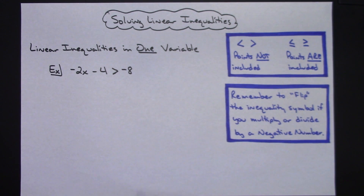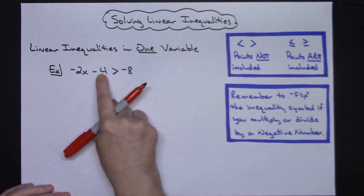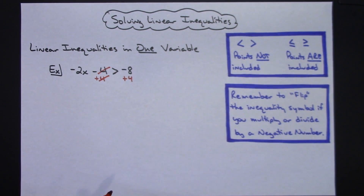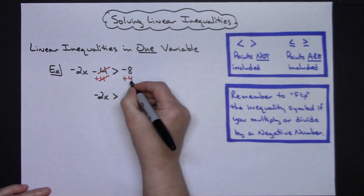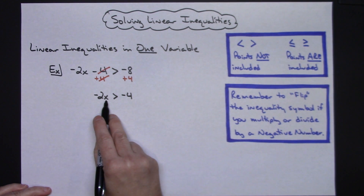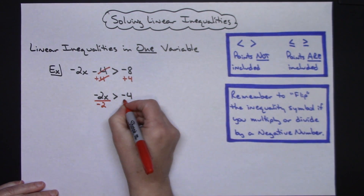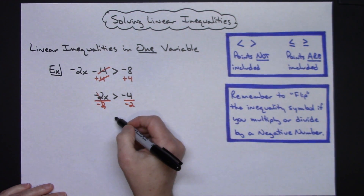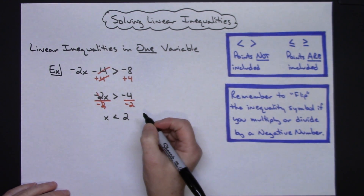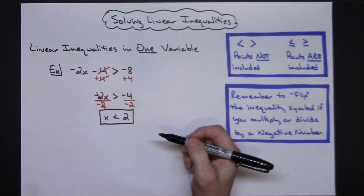For this two-step inequality, it's solved just like a two-step equation — isolate X on the left-hand side. First, add four to both sides; the fours on the left cross out, leaving negative 2x is greater than negative 4. Now divide both sides by negative 2. Since we're dividing by a negative number, we flip the inequality symbol, giving us x is less than positive 2.